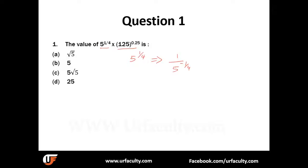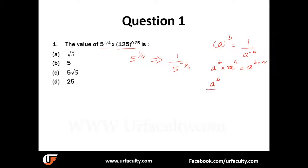This means a to the power of b is equal to one over a to the power of minus b. Please remember this. The next concept: a to the power of b multiplied by a to the power of n equals a to the power of b plus n. And a to the power of b divided by a to the power of c is equal to a to the power of b minus c.